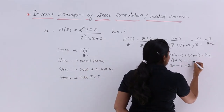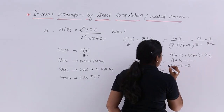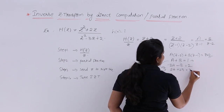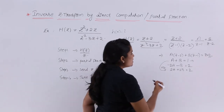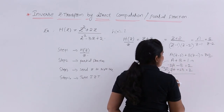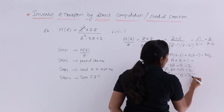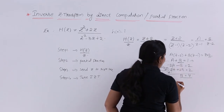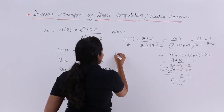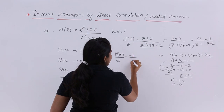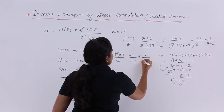To solve the two equations, I multiply the first equation (A + B = 1) by 2 to get 2A + 2B = 2. Adding this to -2A - B = 2 gives B = 4. Substituting B = 4 back: A = 1 - 4 = -3. So H(z)/z = -3/(z - 1) + 4/(z - 2).